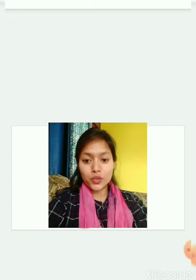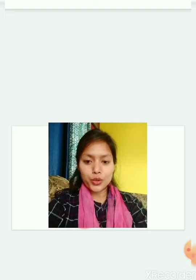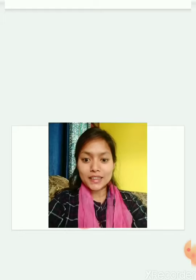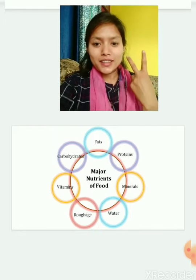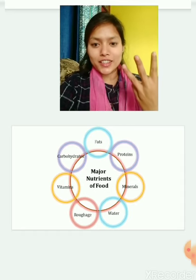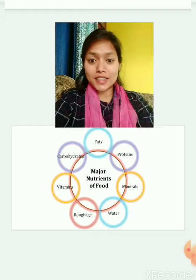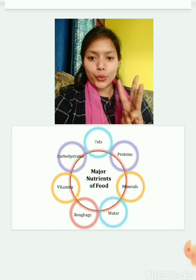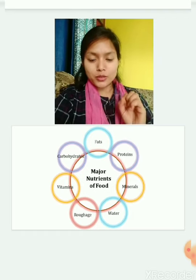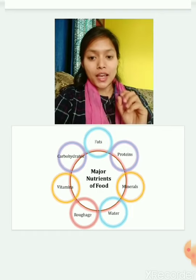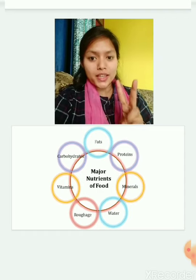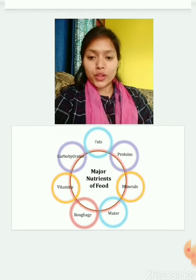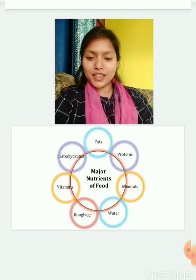In the previous video we started our second chapter, components of food, and we studied that food is composed of mainly three things: nutrients, dietary fibers, and water. We studied that there are five nutrients: carbohydrates, fat, protein, vitamins, and minerals. We studied about carbohydrates, protein, and fats. Now in this video we will study about vitamins and minerals in detail.